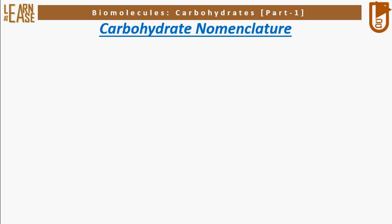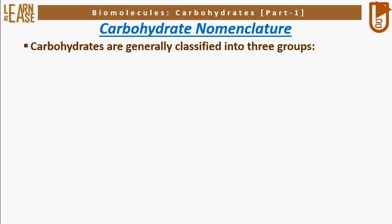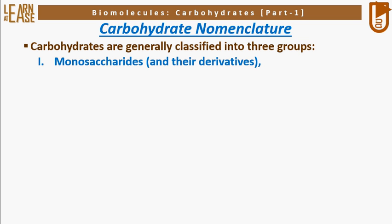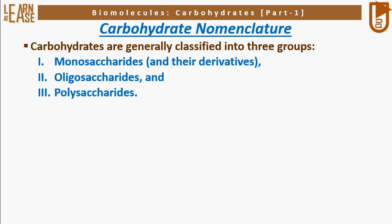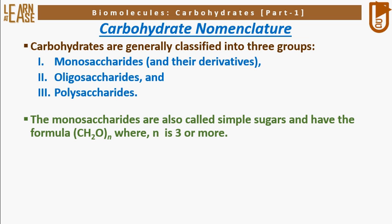Now I will explain the nomenclature of carbohydrates. Carbohydrates are generally classified into three groups: monosaccharides and their derivatives, oligosaccharides, and polysaccharides. The monosaccharides are also called simple sugars and have the formula C(H2O)n where N is 3 or more. Monosaccharides cannot be broken down into smaller sugars under mild conditions.